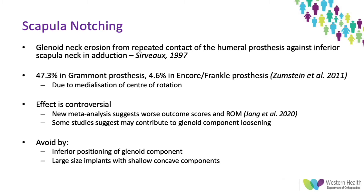So firstly, scapular notching. This is defined as glenoid neck erosion from repeated contact, whereby the humeral prosthesis is hitting the inferior scapular neck when the patient goes into adduction, and it was first described by Sivaro in 1997. It's very common for the Grimont prosthesis because of the way it lowers and medializes the central rotation, bringing the humeral stem and tray much closer to the scapular neck. The Encore prosthesis — designed by Mark Frankel, a US orthopedic surgeon — lateralizes the central rotation and so reduces the risk of scapular notching.